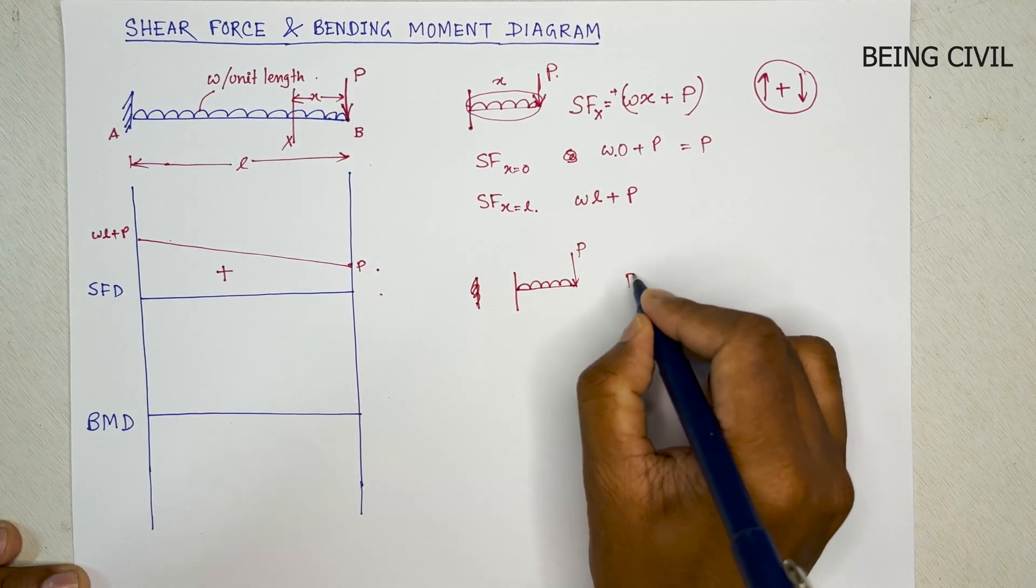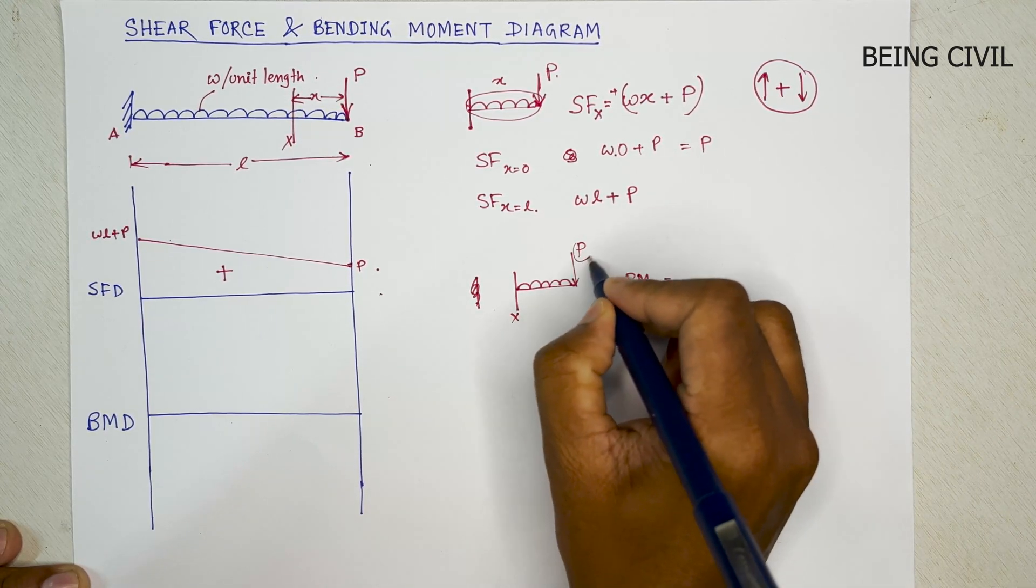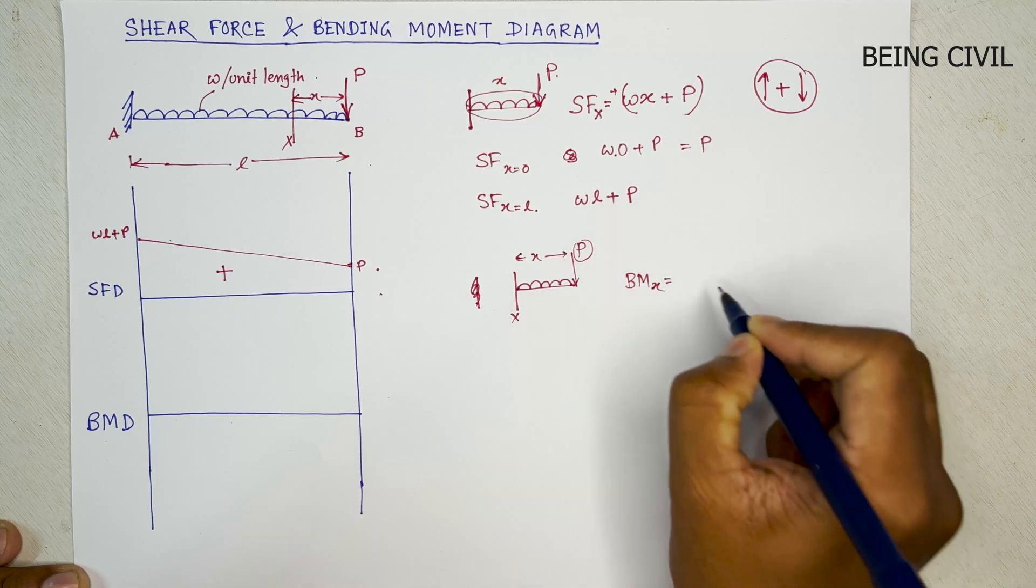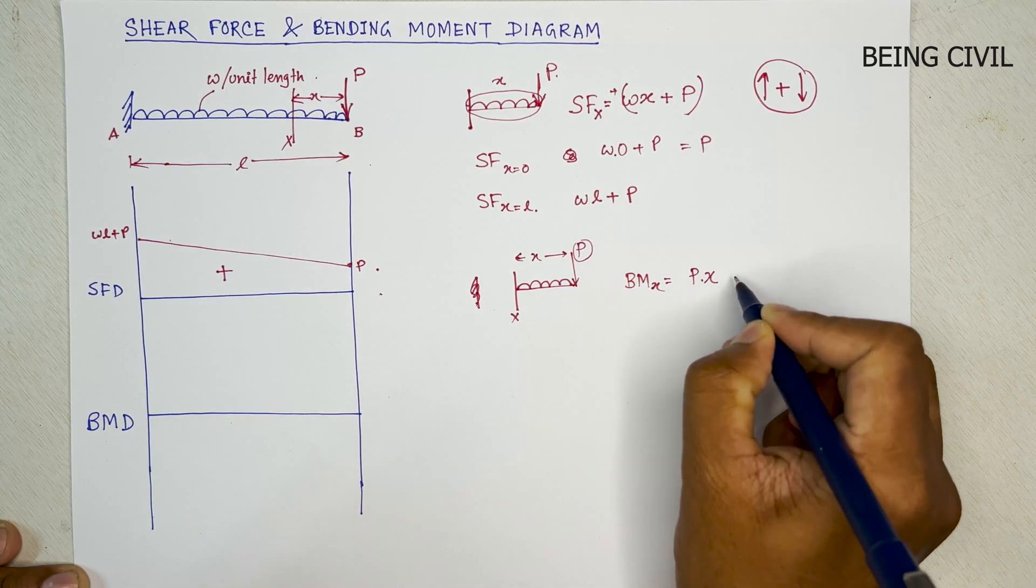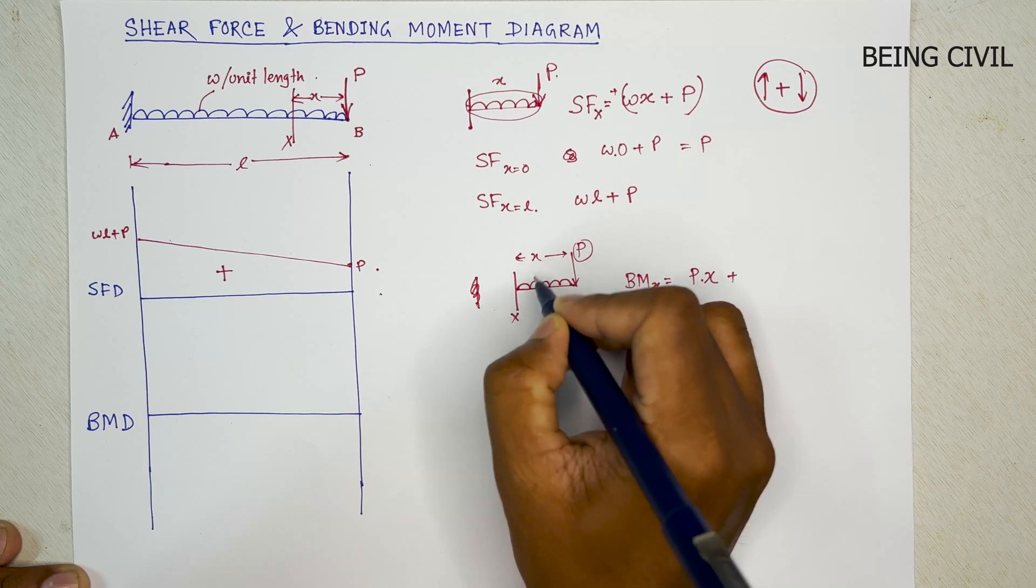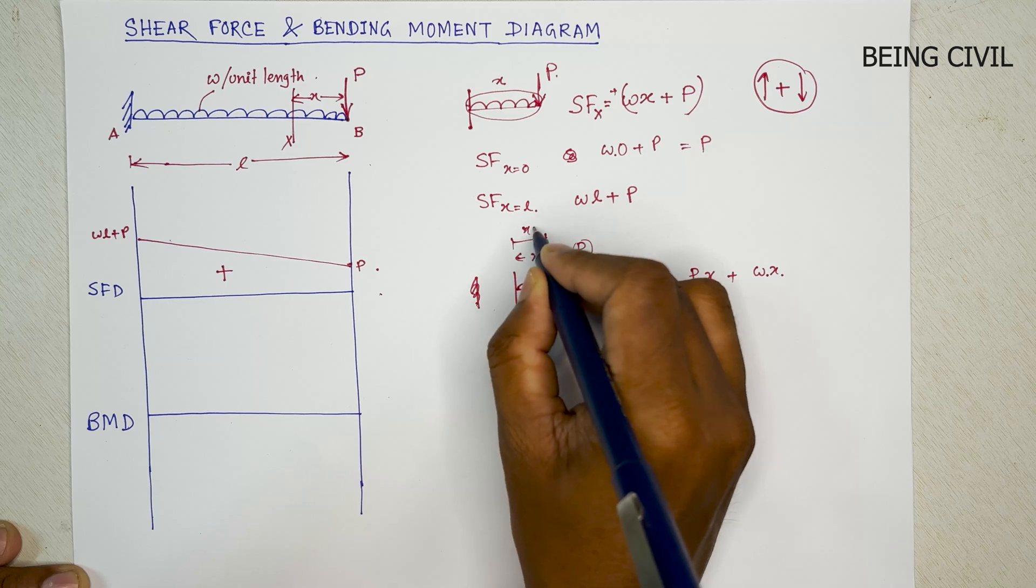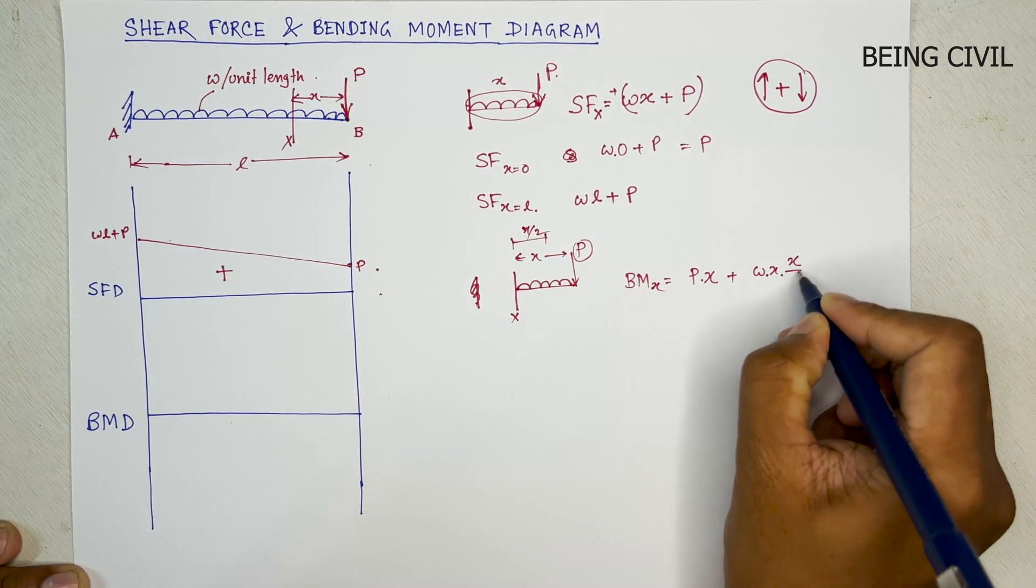And the bending moment at this section will be the P into this distance X, so P into X, plus that UDL is W, the total load W into X. And the CG distance from here is X by 2.